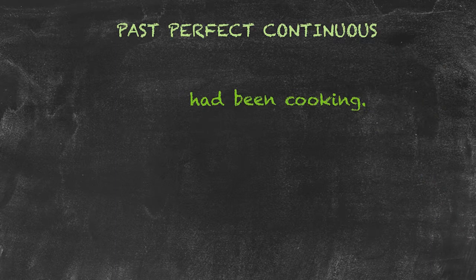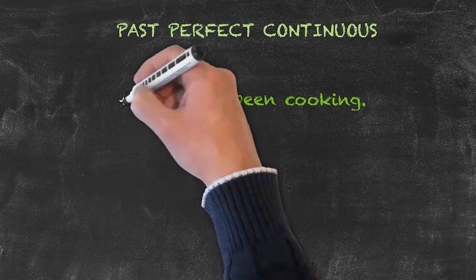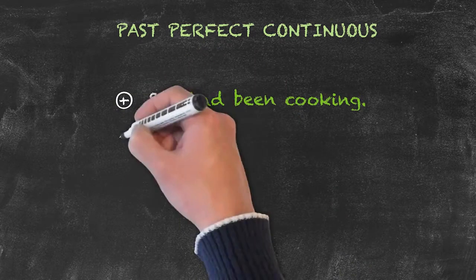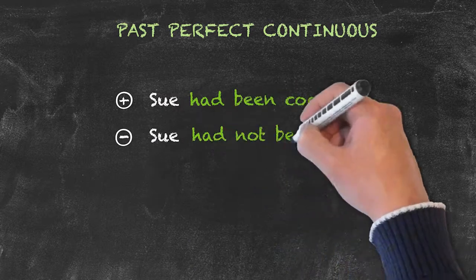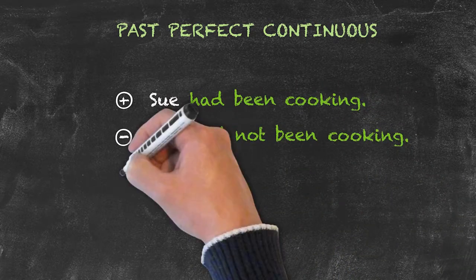For positive sentences, we would start with our subject. Here it's Sue. Sue had been cooking. A negative sentence would be Sue had not been cooking. And in order to ask our question, again that inversion of the subject and had, so it comes out had Sue been cooking.